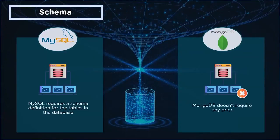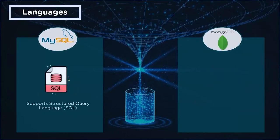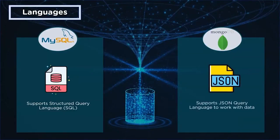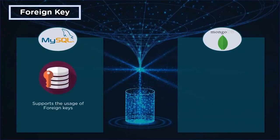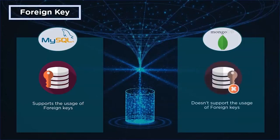Regarding languages: MySQL uses Structured Query Language to retrieve, add, update, and create data. MongoDB supports the JSON query language to work with data. On foreign keys: MySQL supports foreign keys to link one table to another, making data retrieval easy across multiple interlinked tables. MongoDB has no support for foreign keys. For replication: MySQL supports master-slave and master-master replication, where data from one master database can be copied to other servers. MongoDB uses sharding, which allows partitioning of data across multiple servers using a shard key.